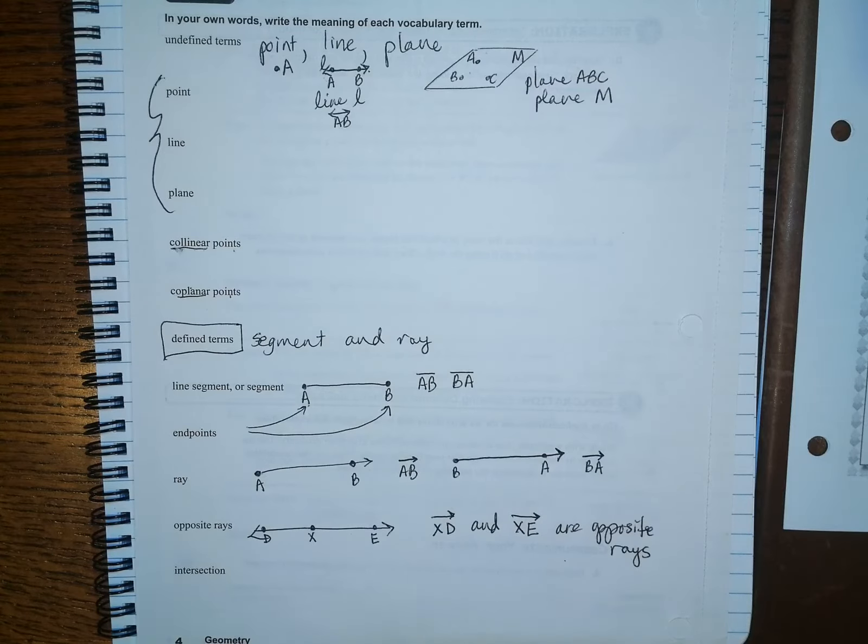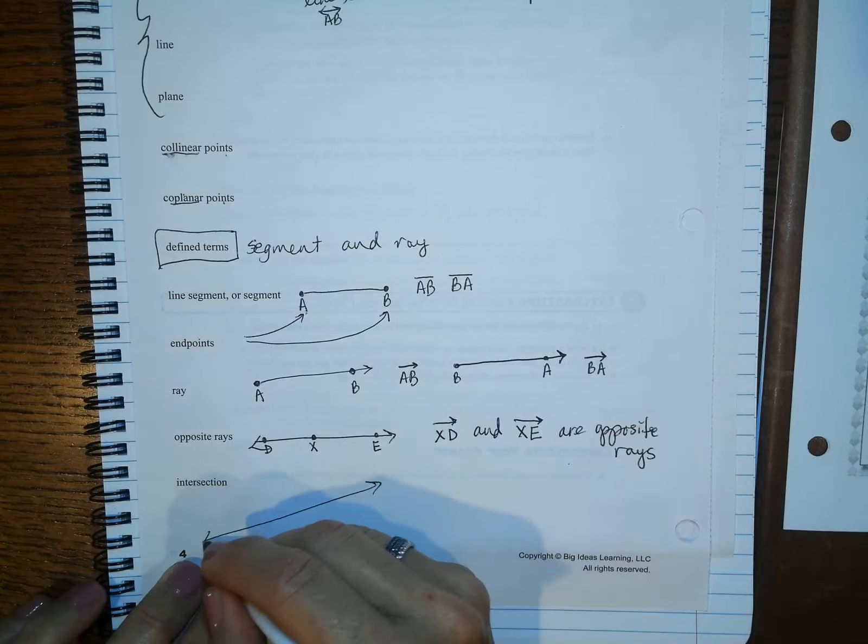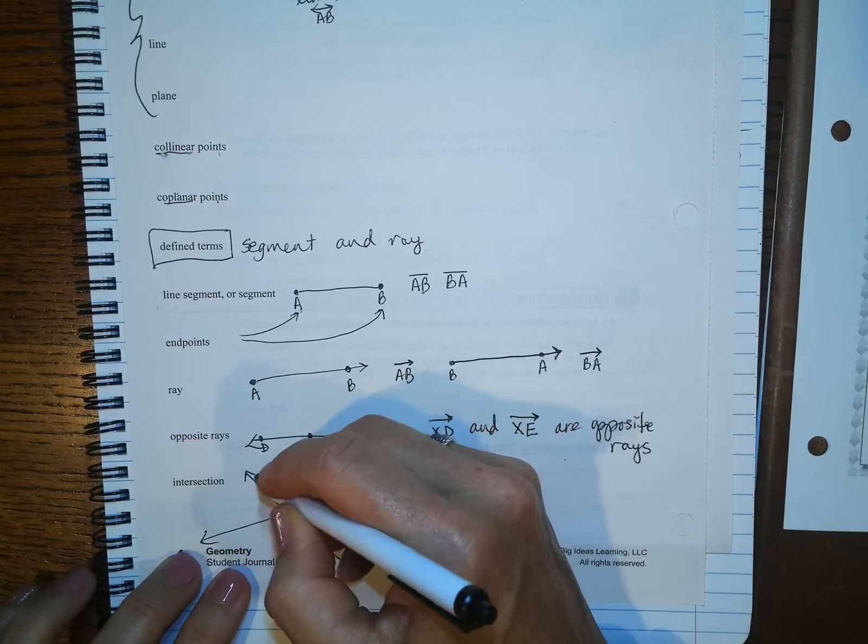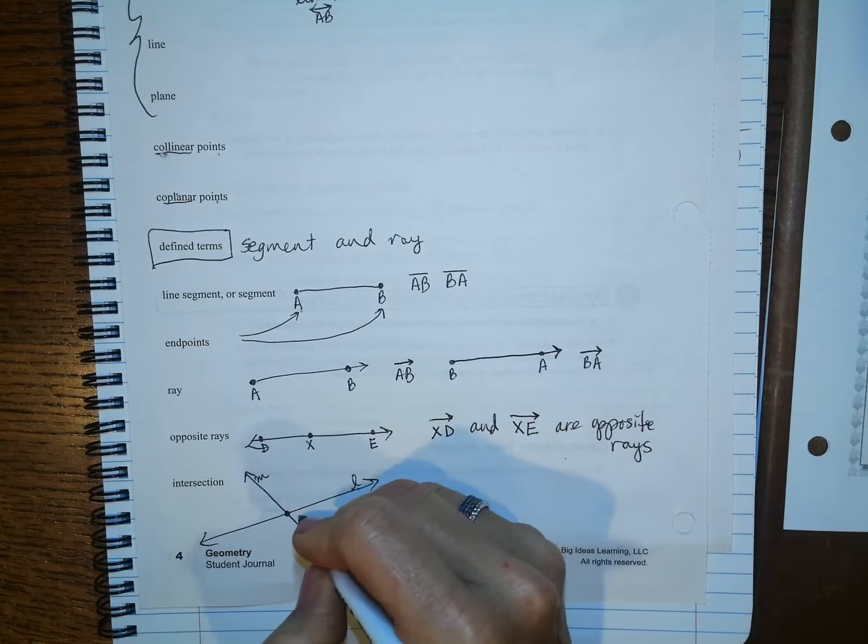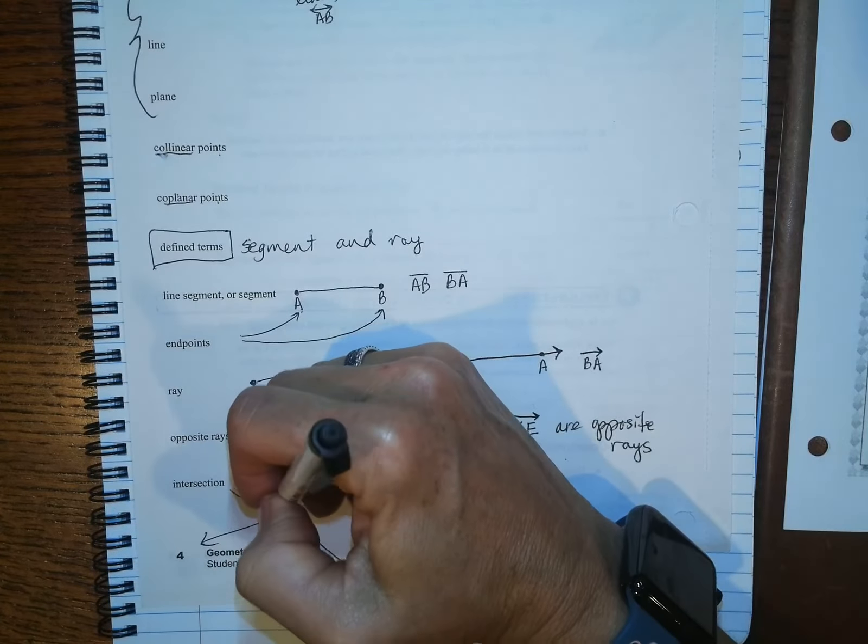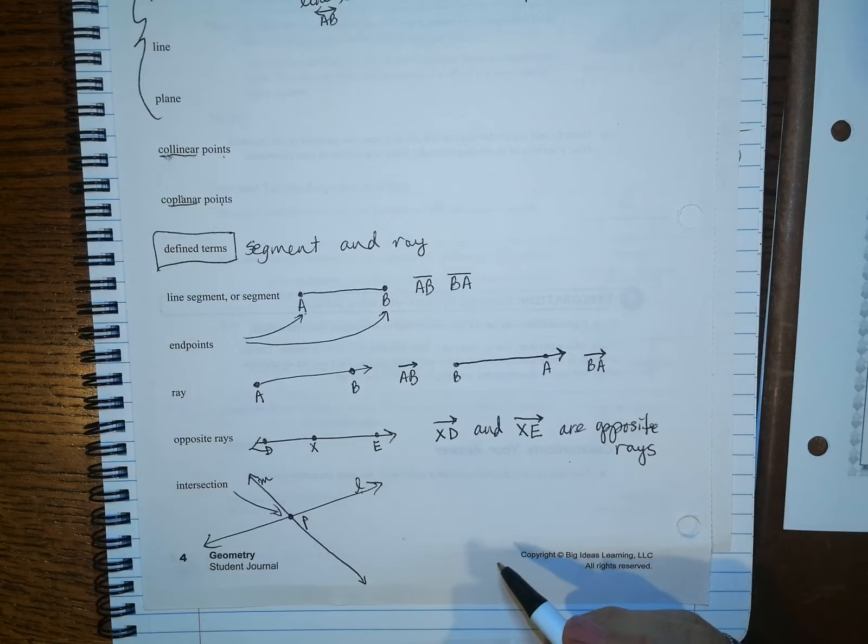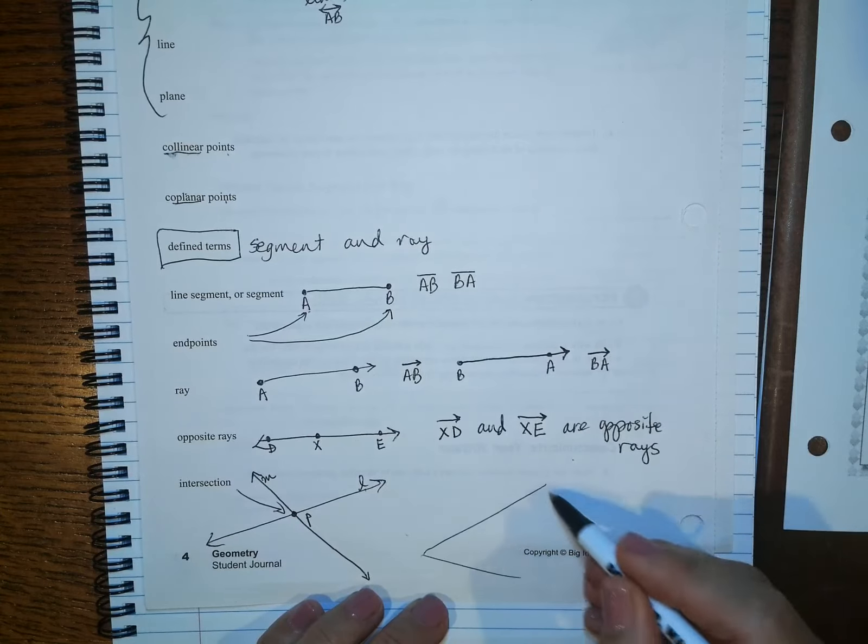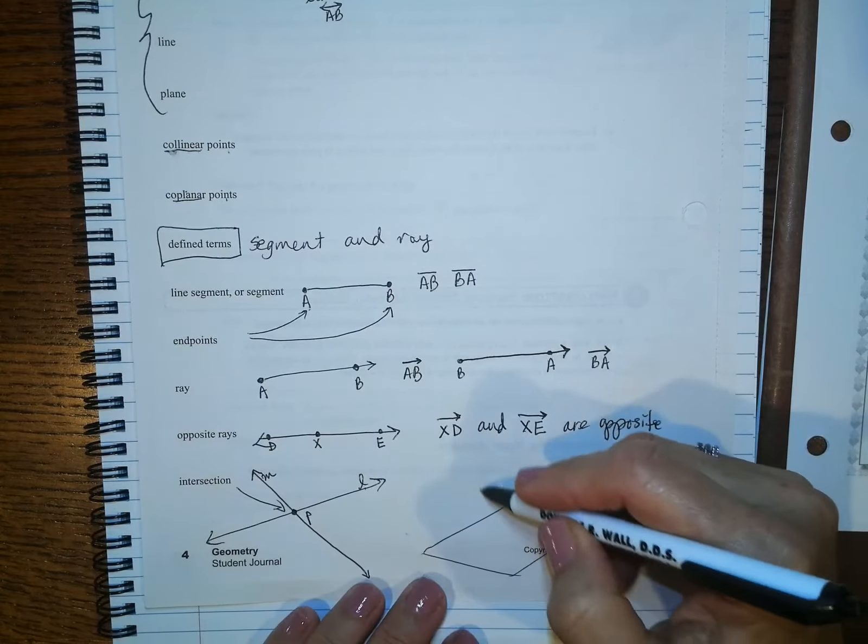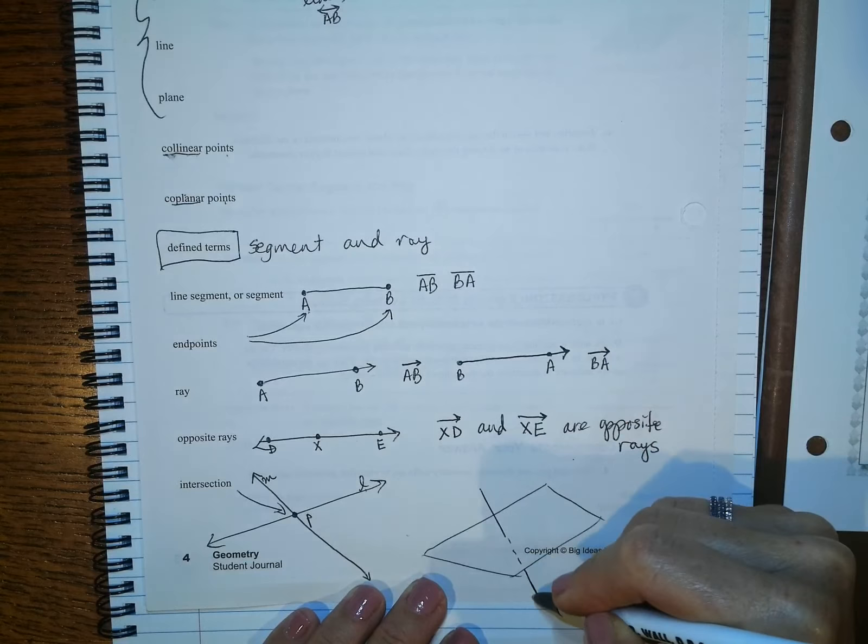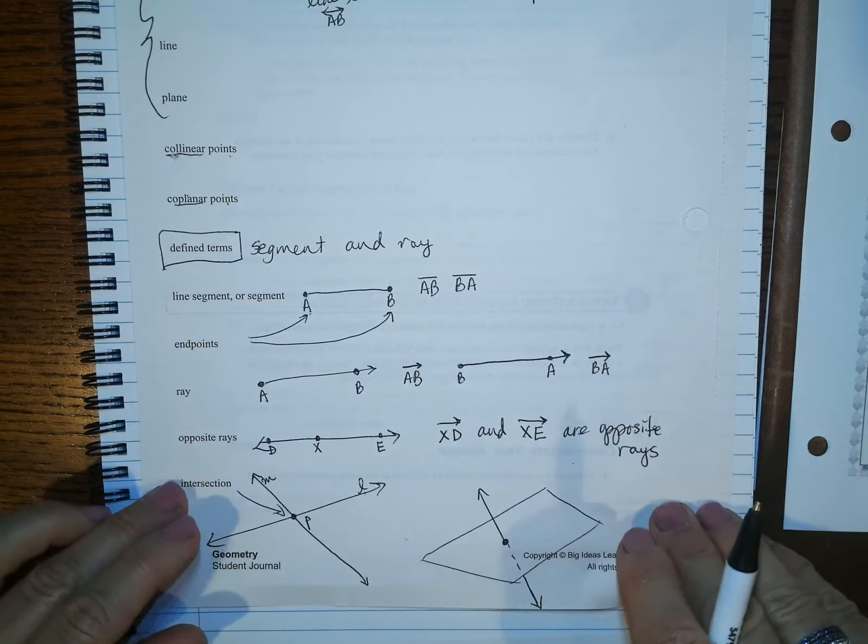Okay. Anytime you have an intersection of anything, like two lines. So say we have two lines. This is line L. And this is line M. Again, represented with a small cursive letter. Then they intersect at point P. That is the intersection. Now you could also have planes intersect. But if you think about it, like if it was two pieces of paper, planes would intersect in a line. You can also have a line intersect with a plane. And that's where it intersects there. So you just have to be careful with your pictures.